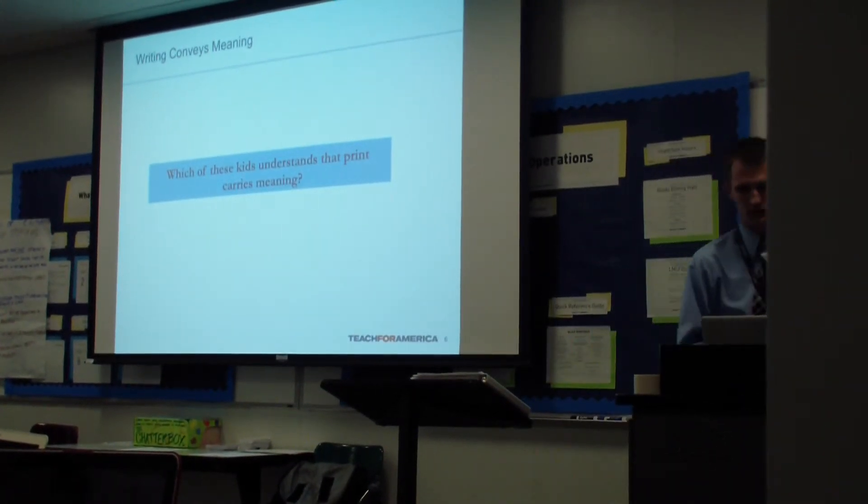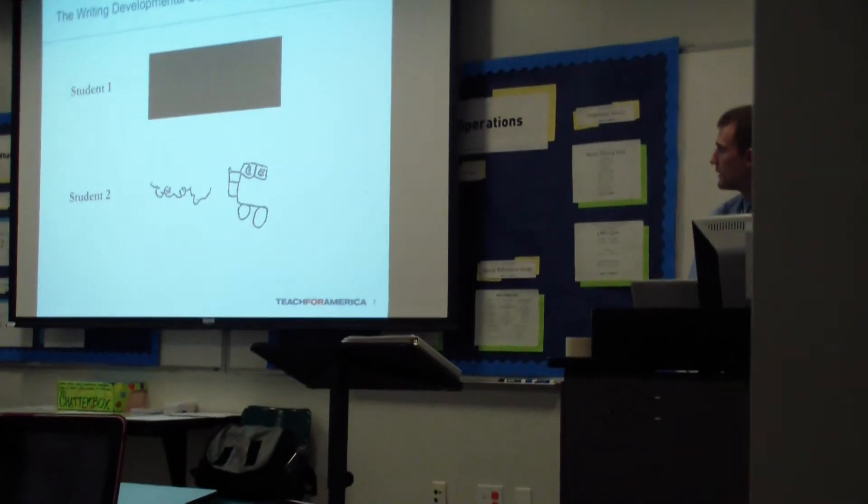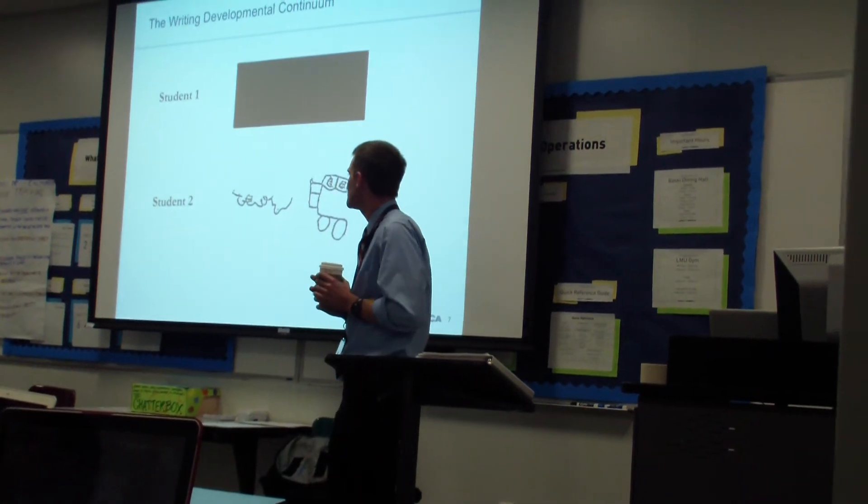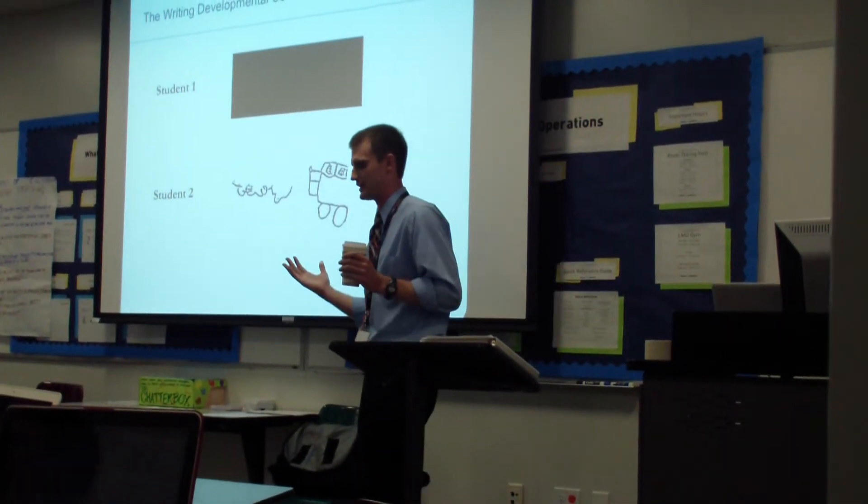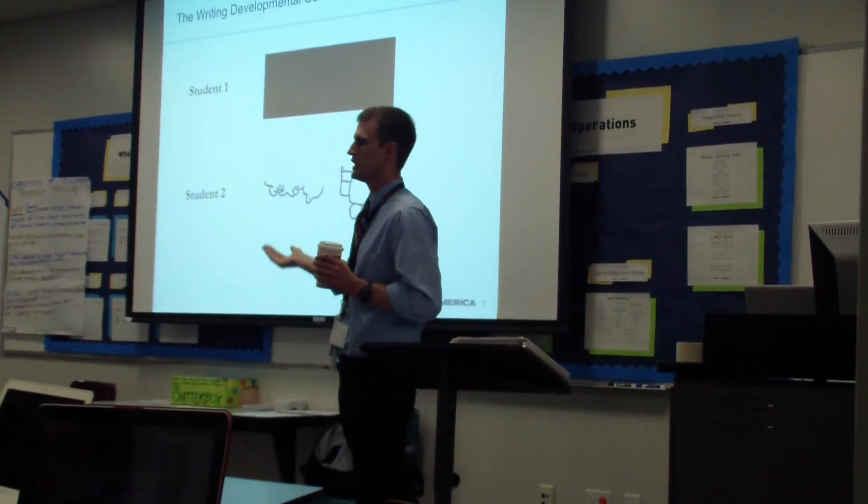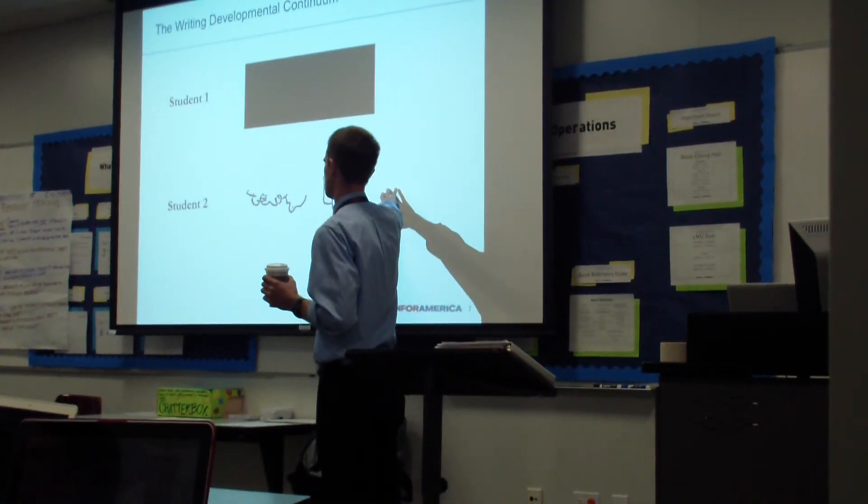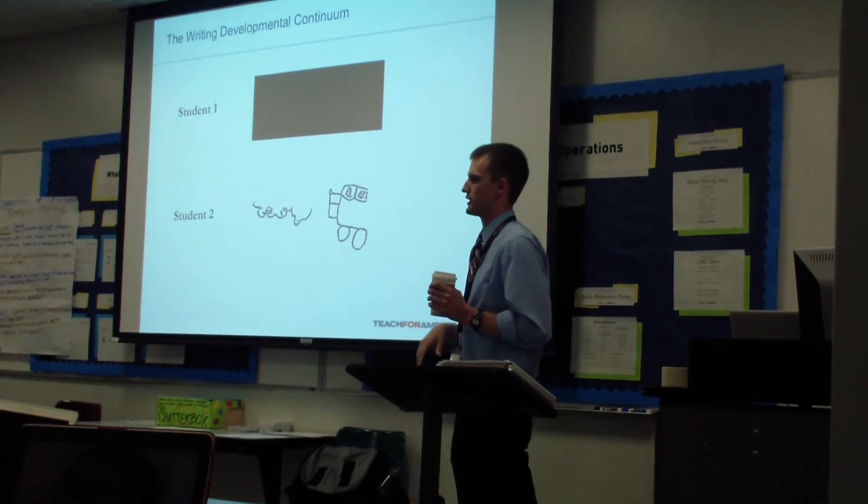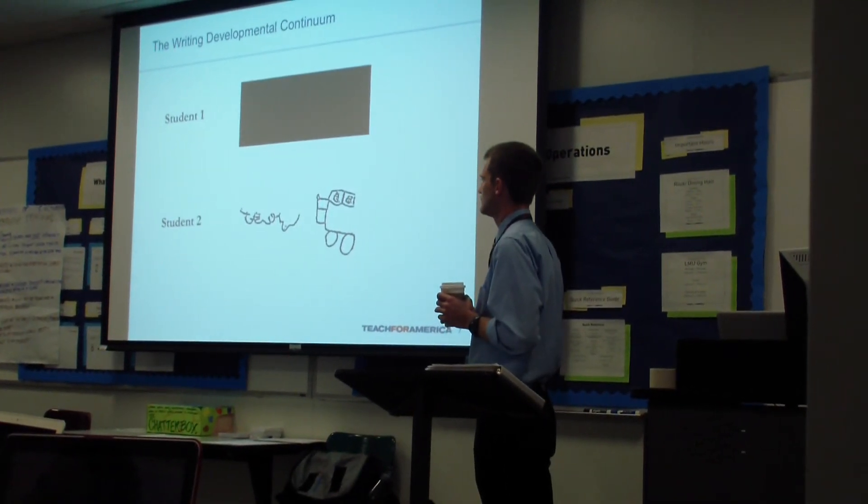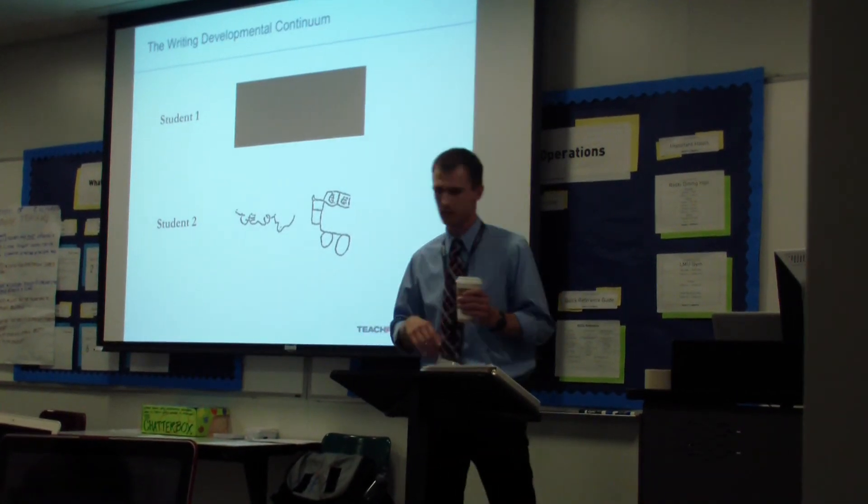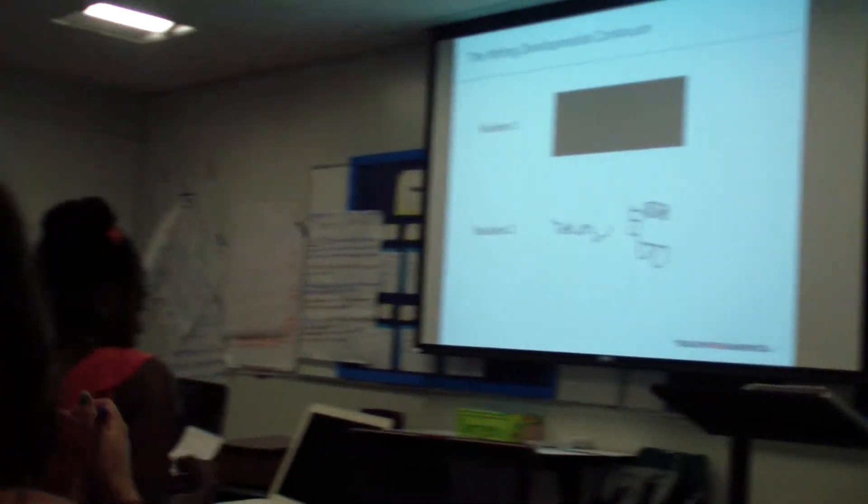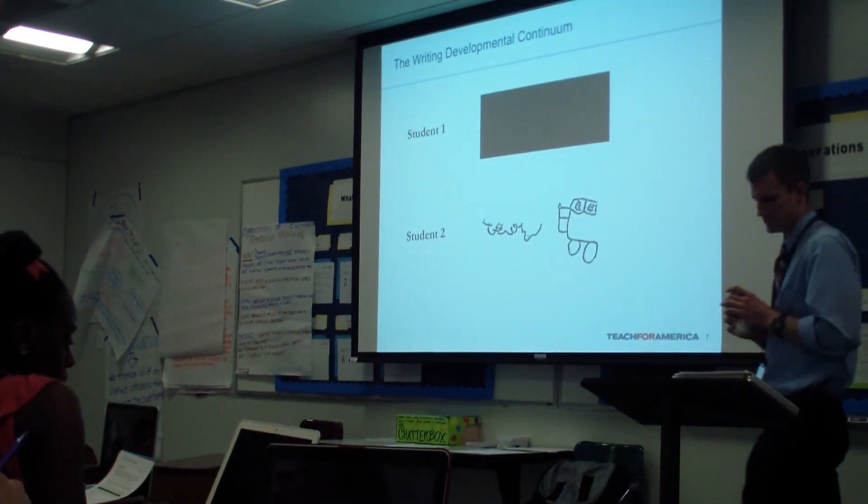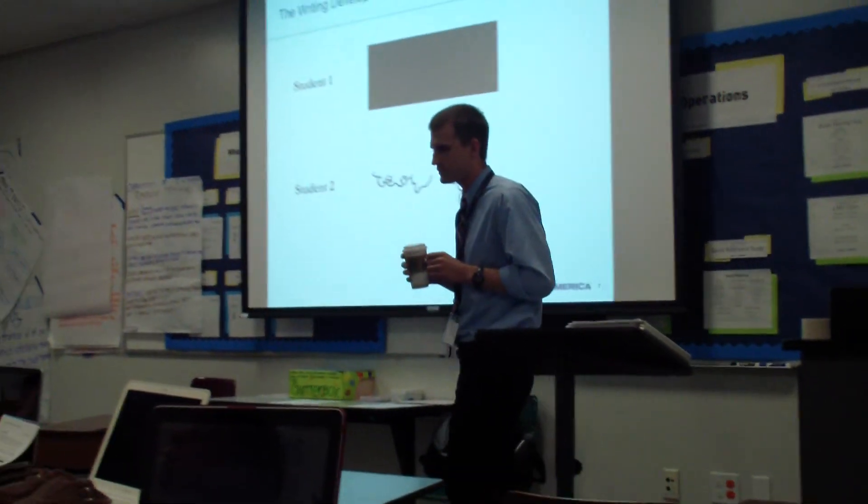The teacher jumps into a continuum that looks at the development of student writing. Before using the formalized rubric based on research, there's an intuitive piece about what you see a student doing and what they might work on next. Looking at a quick sample of student writing, the teacher asks participants to think about what the student is attempting to do and what might be a next step in their progression, then discuss with someone nearby.